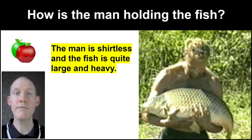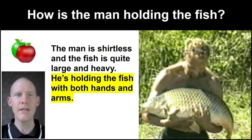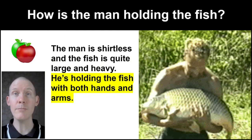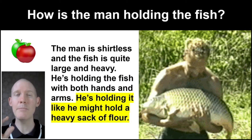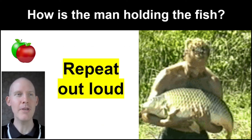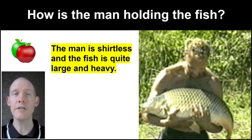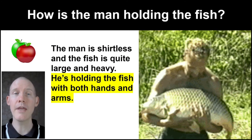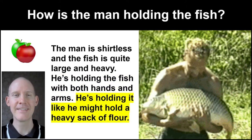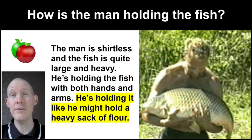The man is shirtless and the fish is quite large and heavy. He's holding the fish with both hands and arms. He's holding it like he might hold a heavy sack of flour. Repeat out loud: 'How is the man holding the fish?' 'The man is shirtless and the fish is quite large and heavy.' 'He's holding the fish with both hands and arms.' 'He's holding it like he might hold a heavy sack of flour.'